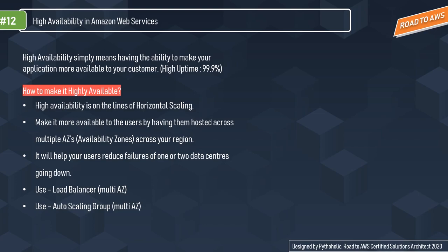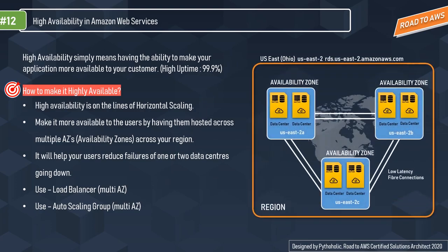We always want to give users the highest uptime, and that's what we call high availability. High availability simply means having the ability to make your applications more available to customers. We aim for 100% but it's typically termed as 99.9%. On AWS, high availability is on the lines of horizontal scaling but not exactly the same — we host applications across multiple regions and across multiple availability zones.